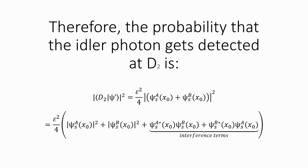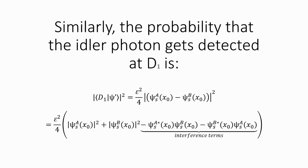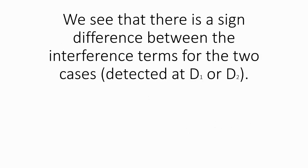Therefore, the probability that the idler photon gets detected at D2 is... Similarly, the probability that the idler photon gets detected at D1 is... We see that there is a sign difference between the interference terms for the two cases.